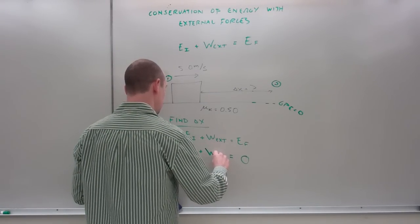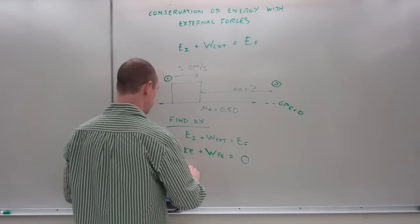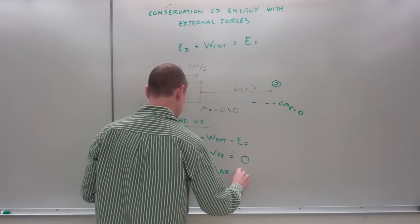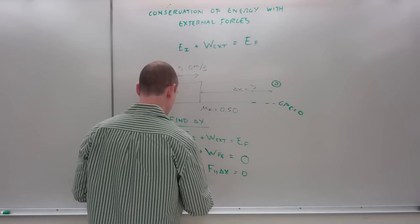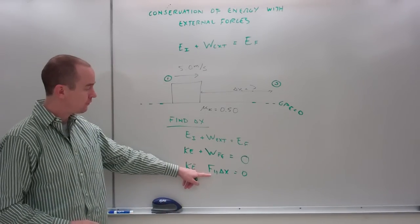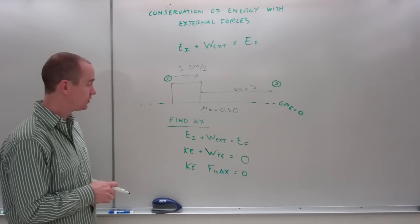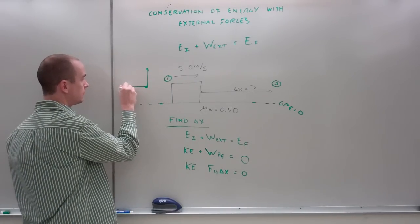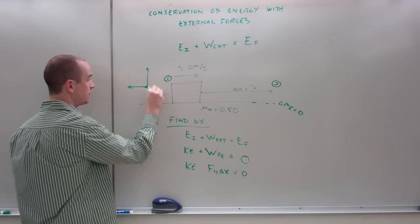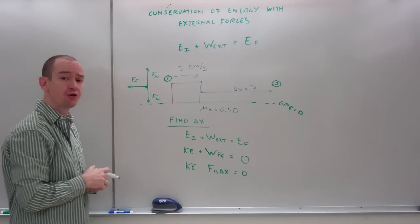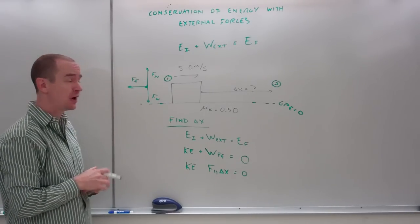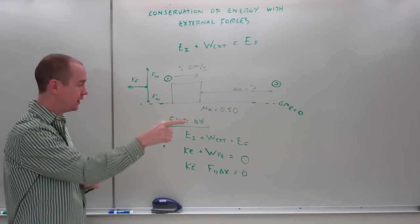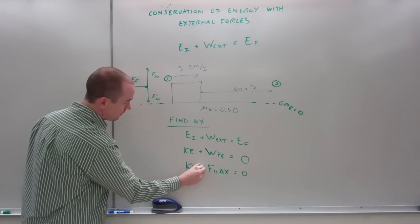So, this is the work due to the force of friction. Force parallel times my displacement. However, I notice that my force is going to be friction. I draw a free body diagram to help remind me of the forces. I notice my force of friction points that way, and my displacement is that way. Therefore, my work should be negative.